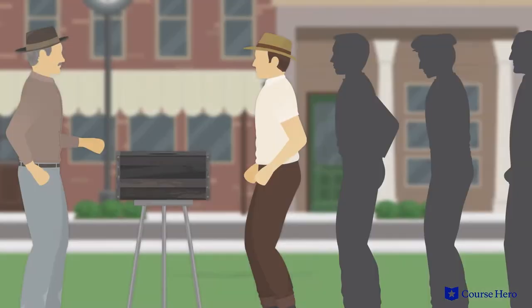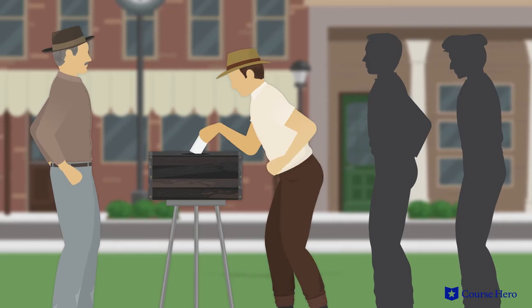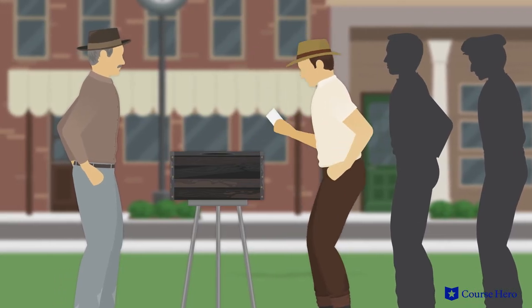This black box holds the villagers' dark secrets and also points to the meaninglessness of the ritual of the lottery. It's also important to note the box itself is shabby, splintered, and faded.